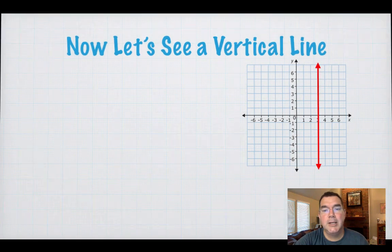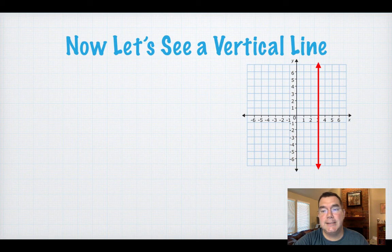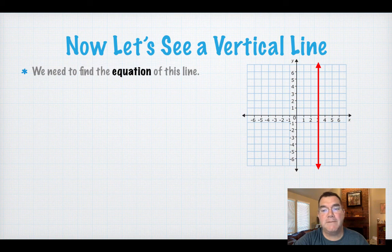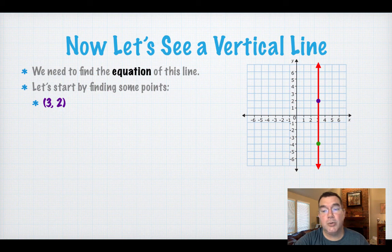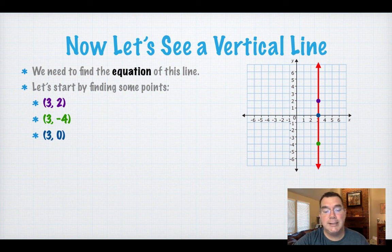Alright, so now let's look at vertical lines. This is a red vertical line and I need to find the equation of that line. So again, I'm going to find some points and see what they have in common. That purple point has coordinates (3, 2). The green point has coordinates (3, -4). And the blue point has coordinates (3, 0).